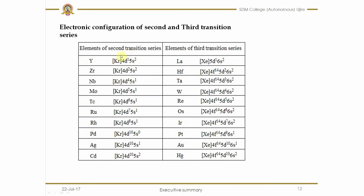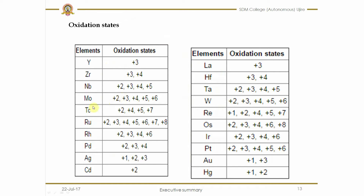Here the electronic configurations and oxidation states of the second and third transition series are given. The second transition series runs from yttrium to cadmium, and the third transition series follows. Lanthanum belongs to the F-block elements because its properties are similar to those of F-block elements. These are the oxidation states of the second and third transition series.